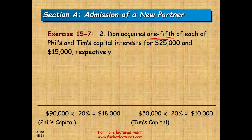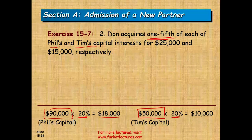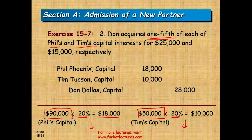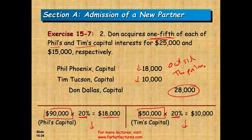In the next scenario, Don acquires one-fifth of each of Phil and Tim's capital. Phil gives up 20%, which is $90,000 × 20% = $18,000. Tim gives up 20%, which is $50,000 × 20% = $10,000. So Don acquires $28,000 total — $18,000 from Phil and $10,000 from Tim. Again, this is outside the partnership; the partnership did not receive any cash.